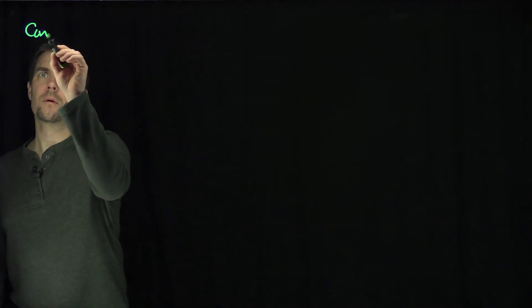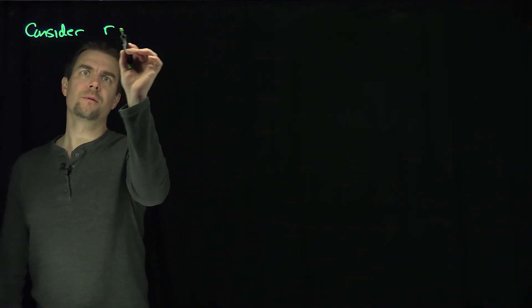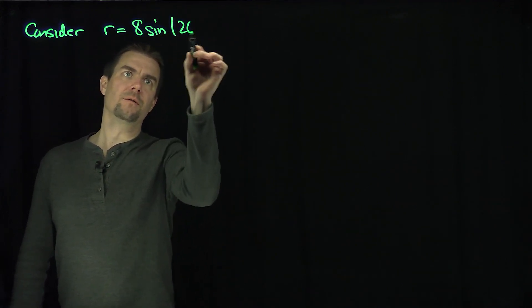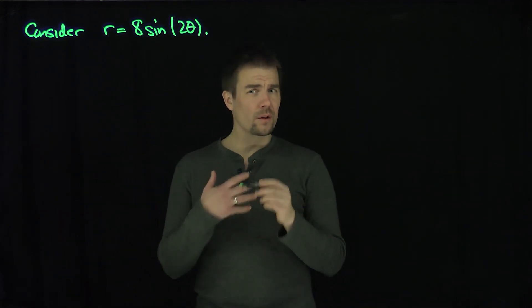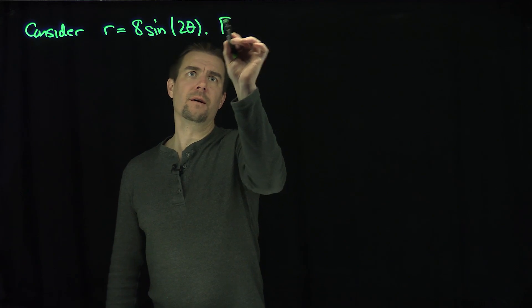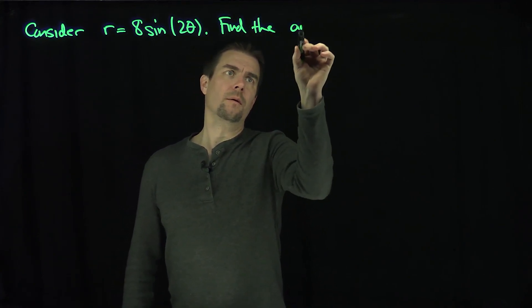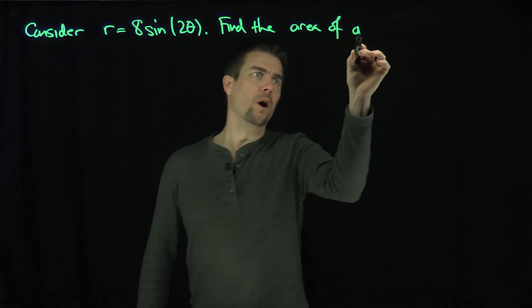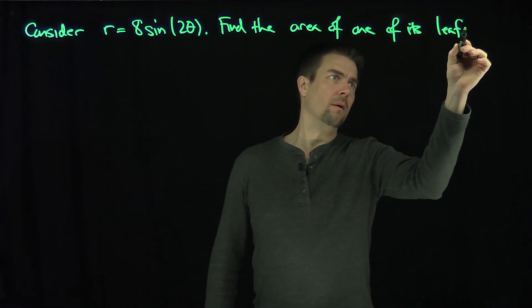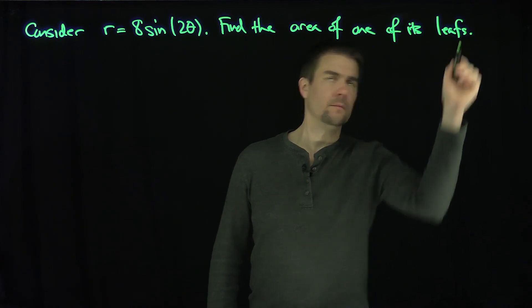Hello, students. In this video, we'll see an example of computing the area in one leaf of a polar rose. Let's consider the polar equation r equals 8 sine of 2 theta. I'd like to find the area in one of its leaves. Find the area of one of its leafs.